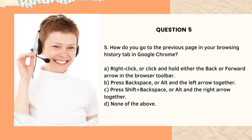Question number five: How do you go to the previous page in your browsing history tab in Google Chrome? This one is actually quite confusing. Options: A, right-click or click and hold either the back or forward arrow in the browser toolbar. B, press Backspace or Alt and the left arrow together. C, press Shift plus Backspace or Alt and the right arrow together. And D, none of the above. My answer is letter B — press Backspace, or you can use Alt and the left arrow together.